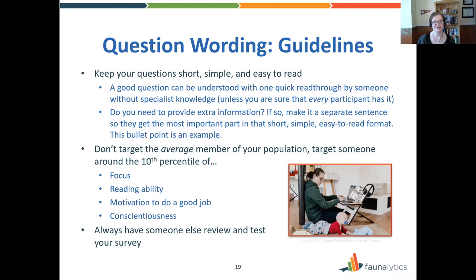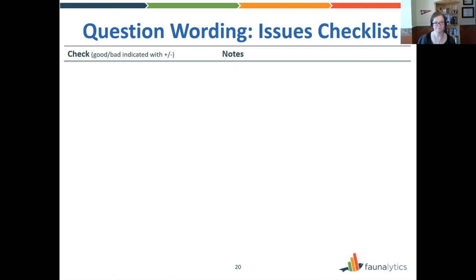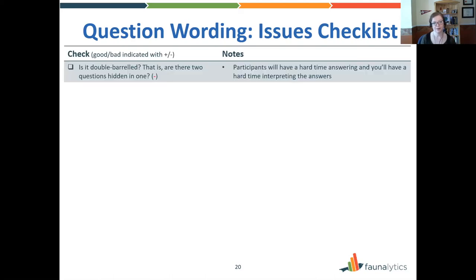Here's a checklist for issues in your question wording. Double-barreled questions look like one question but are actually two hidden in one — for example: 'Did you enjoy this presentation and find it useful?' That's really two questions, and you should pull them apart, because if people agree with one part but not the other, they won't have any real way of answering.